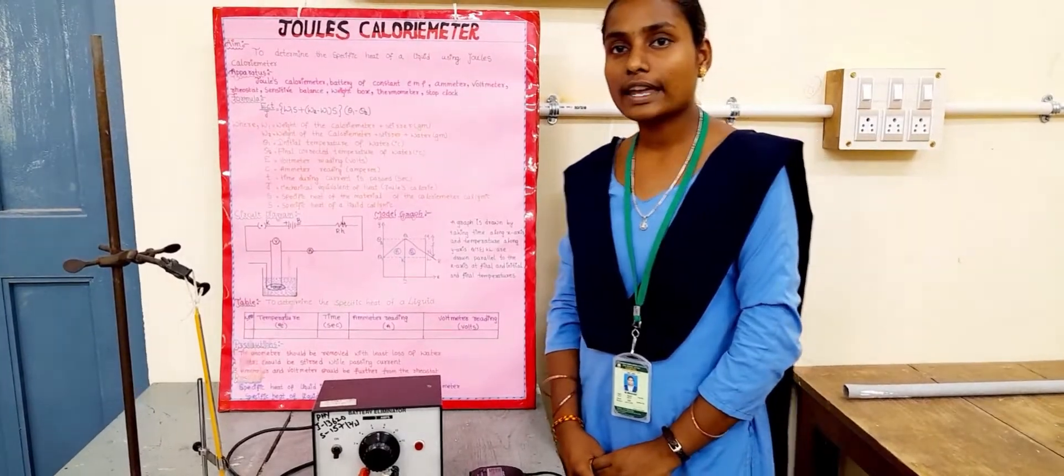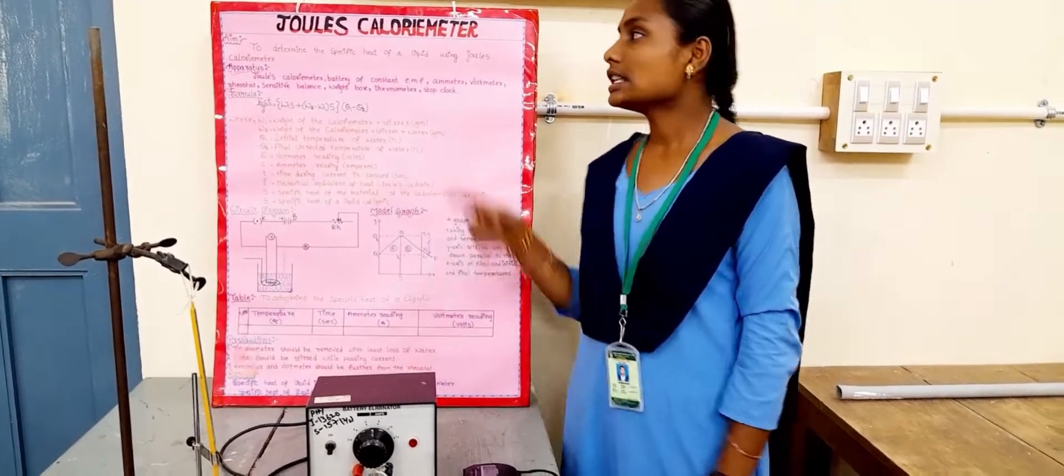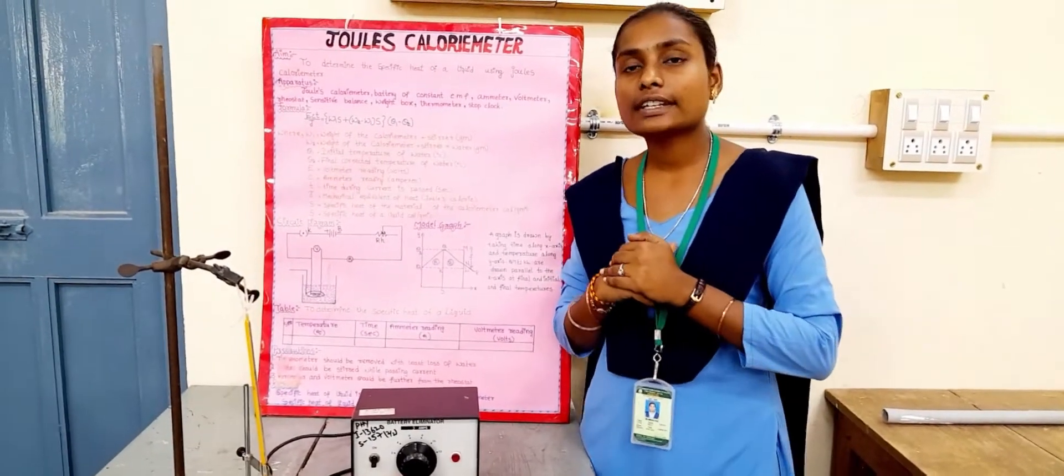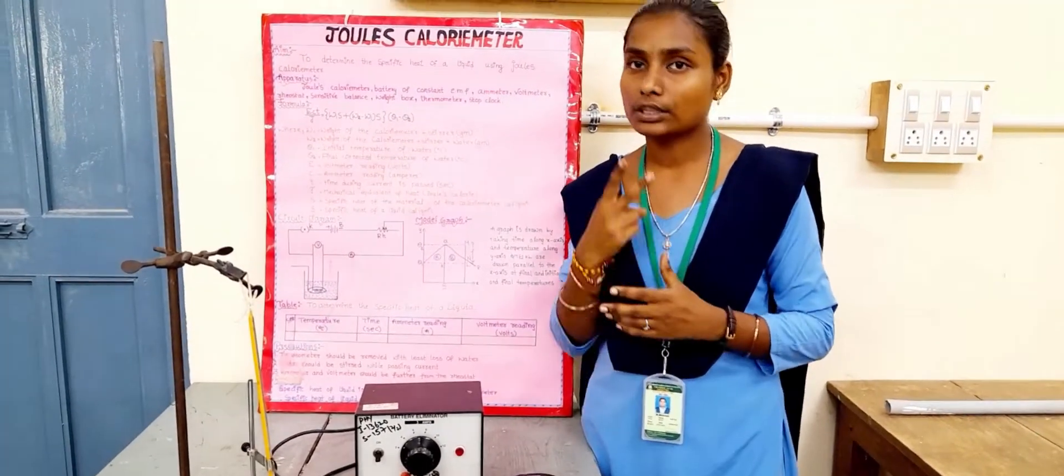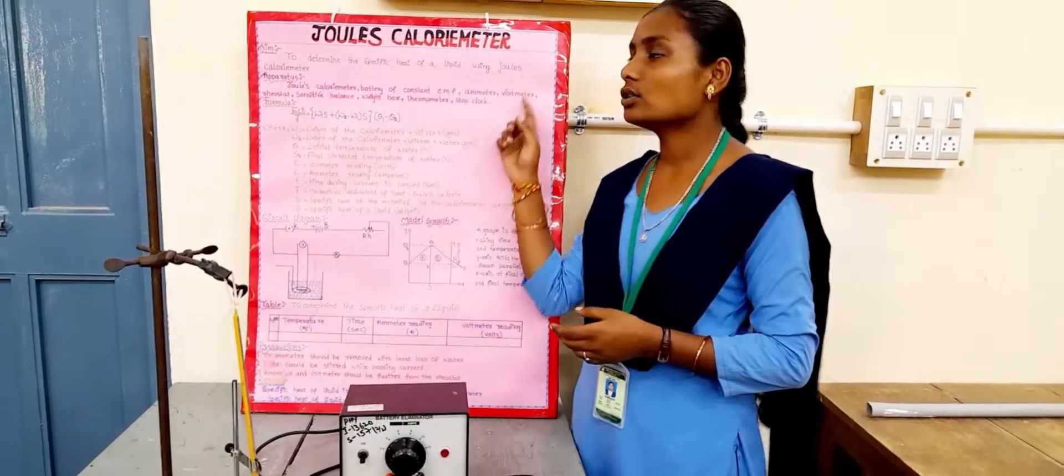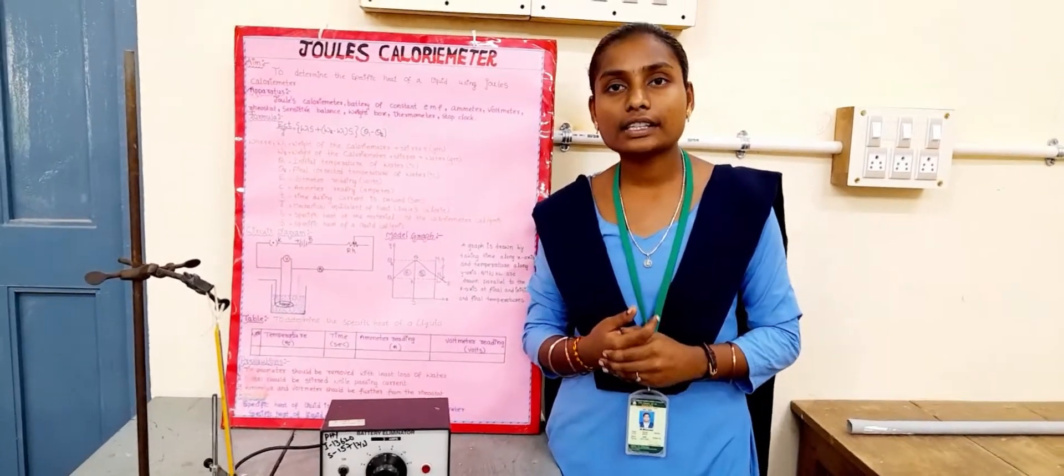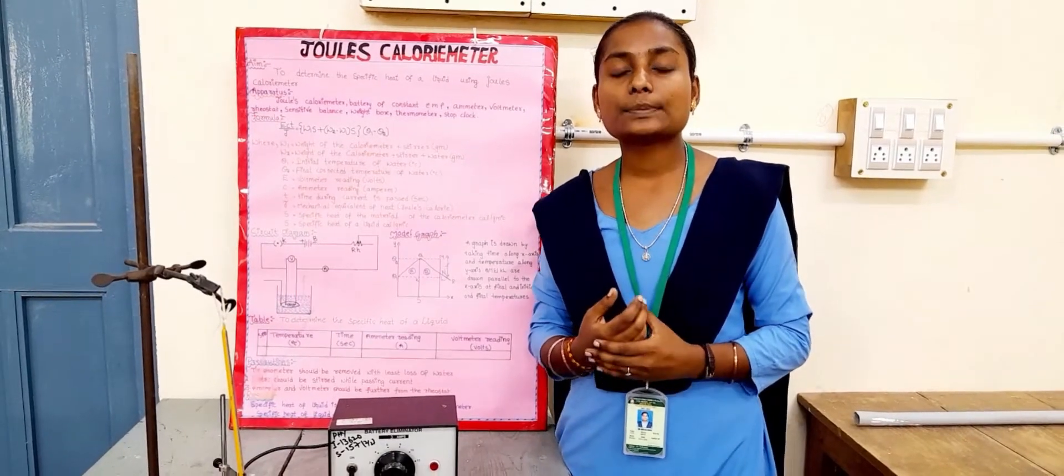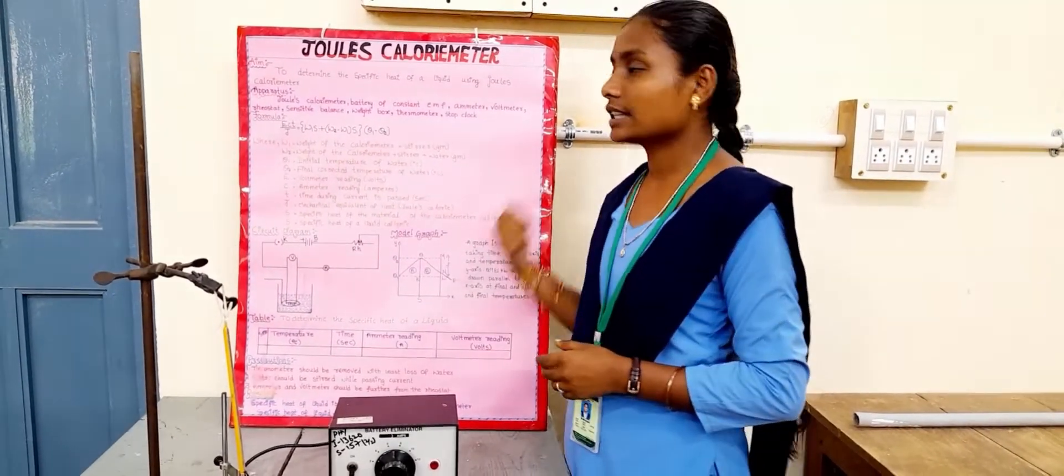Today I am going to explain a new experiment: specific heat of liquid using Joules calorimeter. Specific heat of liquid can be experimentally proved with two experiments. One is Joules calorimeter and another one is Newton's Law of Cooling. Today I am going to explain specific heat of liquid using Joules calorimeter.